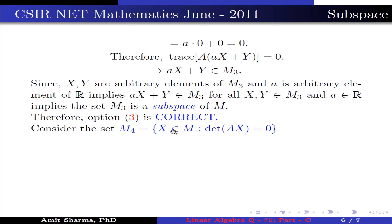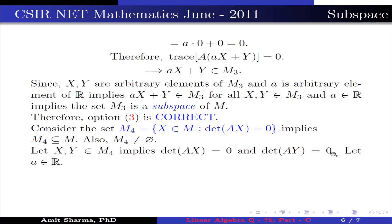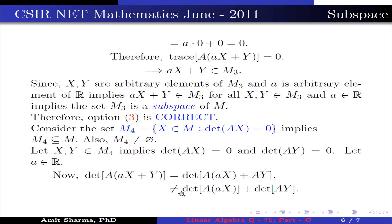Again, consider the set M4 containing x belonging to M such that det(Ax) = 0. This implies M4 is a subset of M. Also, M4 is not equal to the empty set by the same argument as M1, M2, and M3. Let x, y belong to M4. This implies det(Ax) = 0 and det(Ay) = 0. Let α belong to R. Now, det(A(αx + y)) = det(αAx + Ay). This is not equal to det(αAx) + det(Ay). Why? Because det(A + B) ≠ det(A) + det(B).